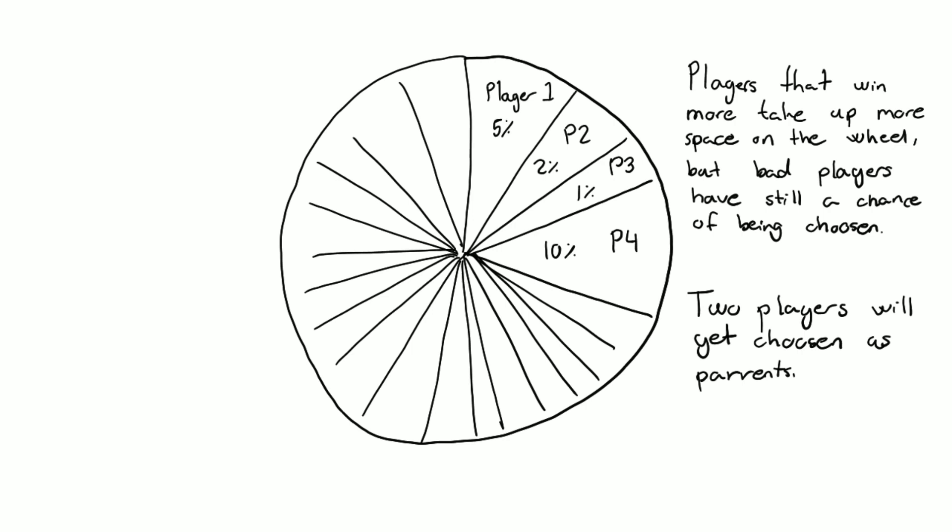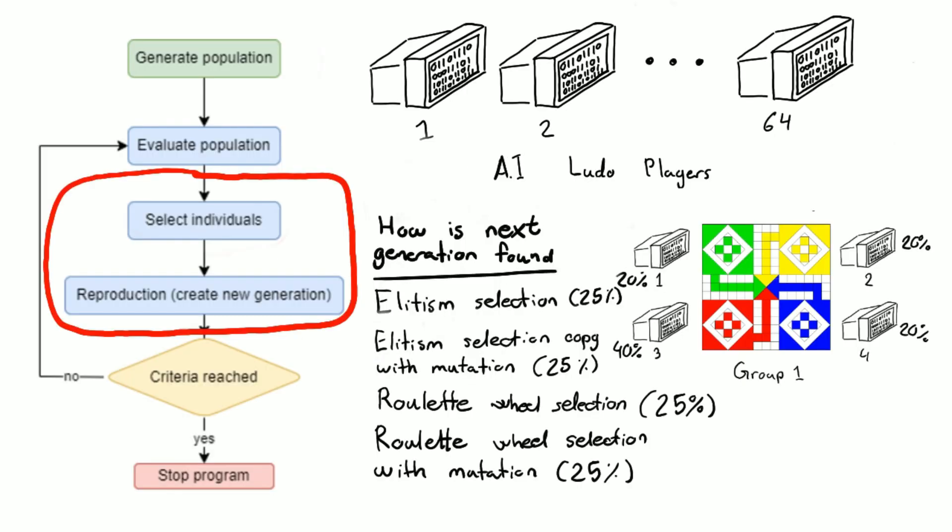However, there's still a chance that the ones that do not perform as well get chosen, and that is to ensure variation, because it might be that one of them is performing really well but it could be that some of the genes that we desire are in the one that looks bad, so we add some variation to this.